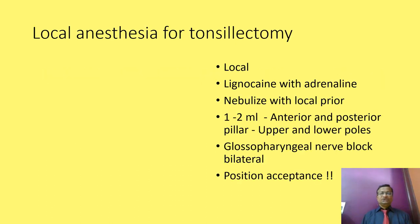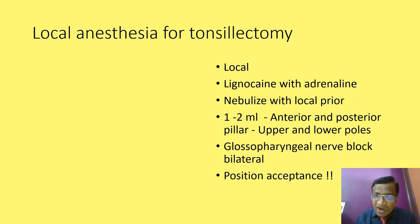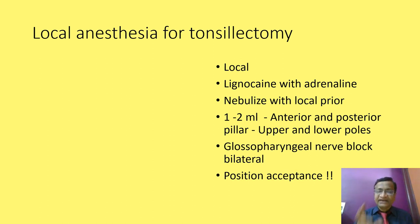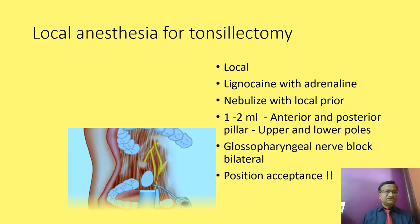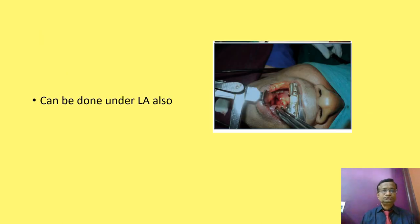Tonsillectomy under local anaesthesia: lignocaine with adrenaline nebulized prior to the procedure, then infiltration at the anterior upper and lower pillars, and a glossopharyngeal nerve block posteriorly. The bilateral glossopharyngeal nerve block takes approximately 20 seconds each side. The patient maintains position for which mild sedation with dexmedetomidine or minimal IV narcotics can be used. We have performed tonsillectomies under local anaesthesia completely — there is no endotracheal tube.